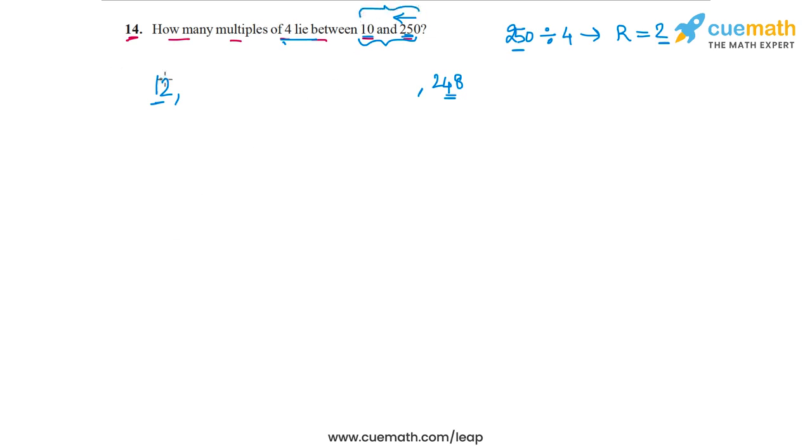Now the other multiples, if we write them out, the next multiple after 12 will be 16, then it will be 20, then 24 and so on. So all these multiples of 4 clearly form an arithmetic progression.